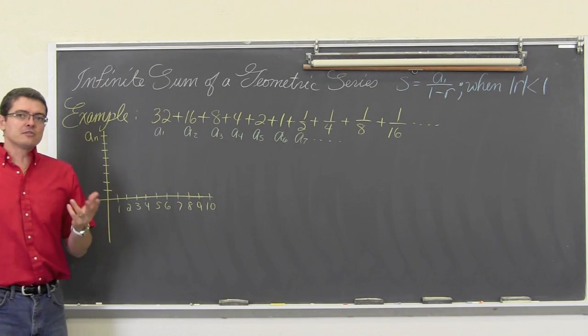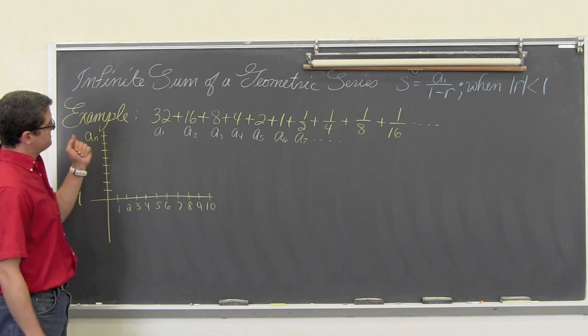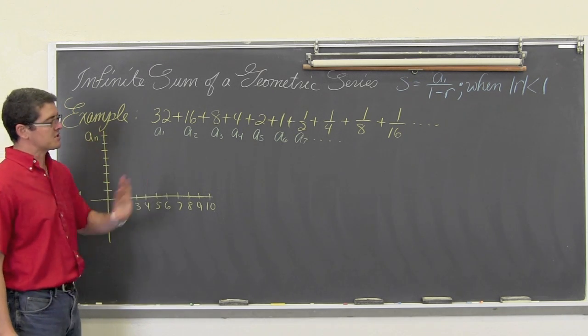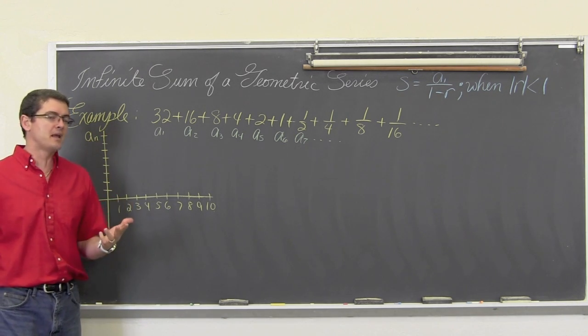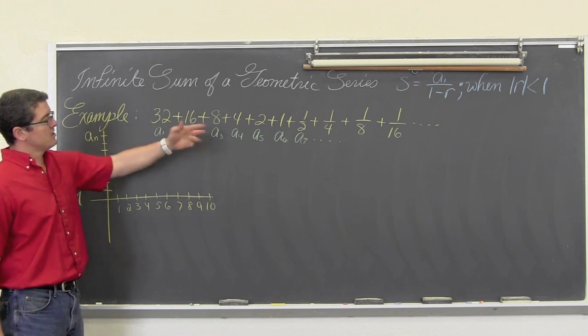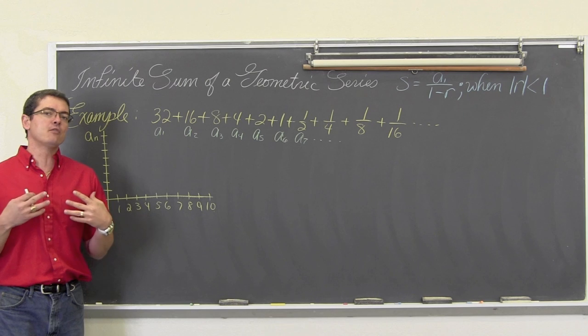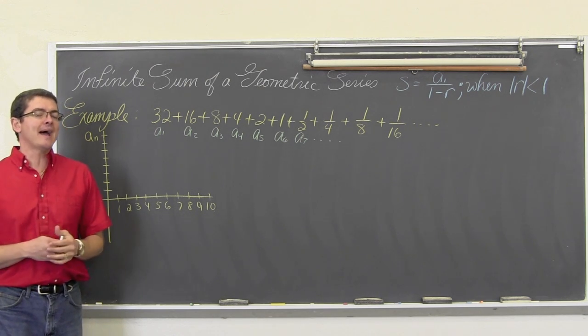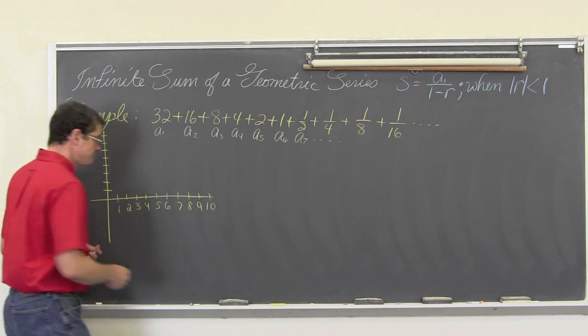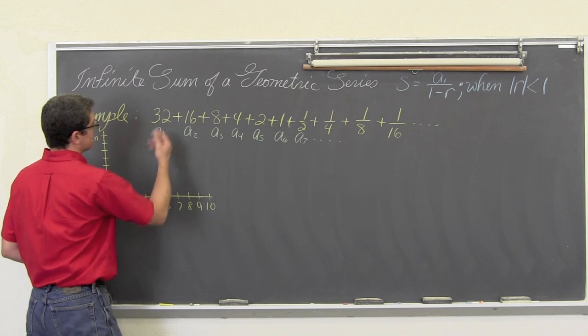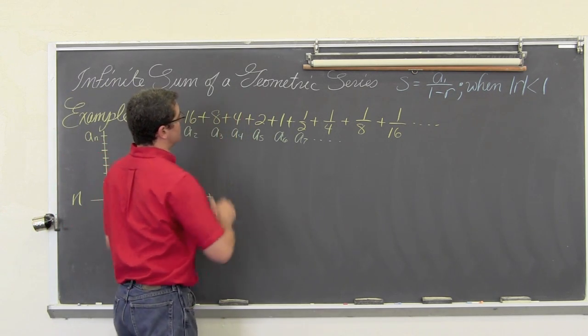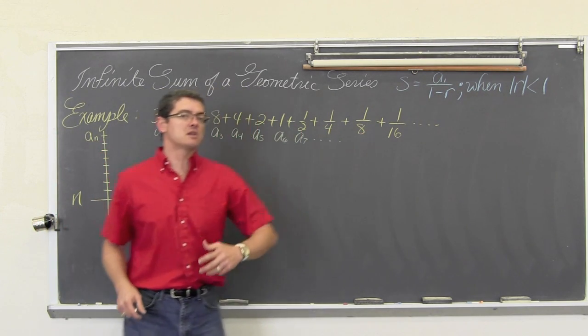We have an example up here. I am going to do three examples for you of how this works. The first one I am just going to show you with a graphical display of this series. Not a proof, but an idea of why it is possible to have an infinite sum. So we have these values of 32, 16, 8, 4, 2, 1, 1 half, 1 fourth, 1 eighth, 1 sixteenth.